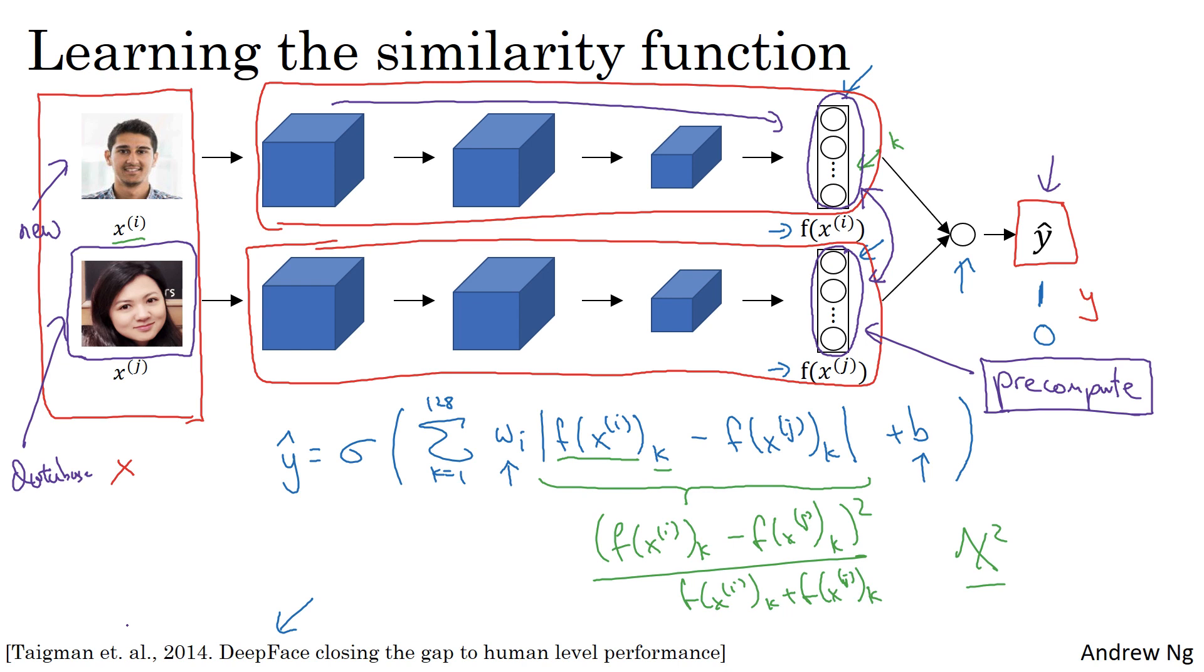This type of pre-computation works both for this Siamese network architecture where you treat face recognition as a binary classification problem, as well as for when you were learning encodings using the triplet loss function as described in the last couple of videos.